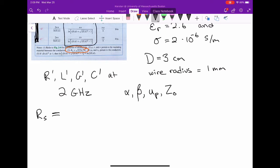So Rs, based on this formula, is square root of π times the frequency, which is 2 gigahertz, times the magnetic permeability in the material divided by σ, and these parameters refer to the conductor material.